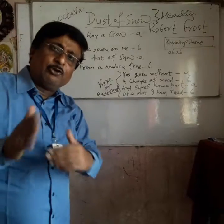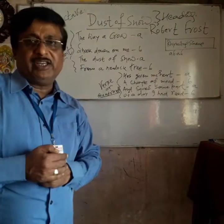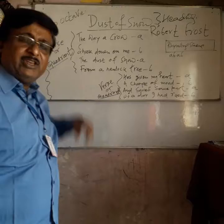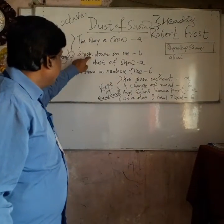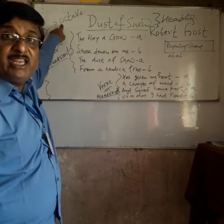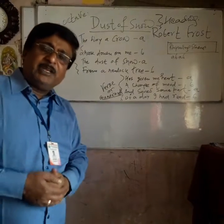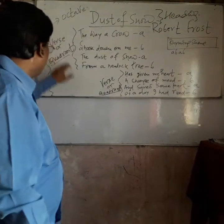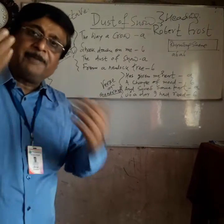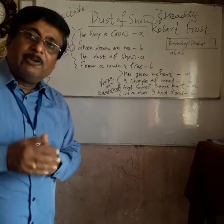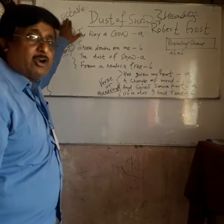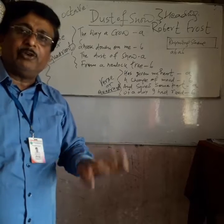First, we will go over the structure of the poetry. This poetry's structure is an octet. Octet means it is of eight lines, and that is why this is called an octave, O-C-T-A-V-E. This octave has been divided into two parts. The first part is called a verse, you can say a quadrant. The second part is also called a verse and quadrant. So verse plus quadrant added with verse plus quadrant finally makes an octave. The octave is simply a poetry of eight lines.